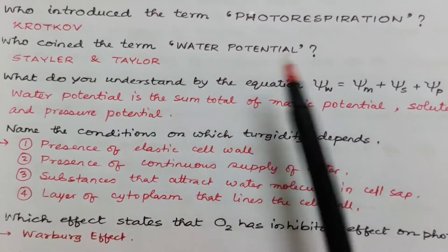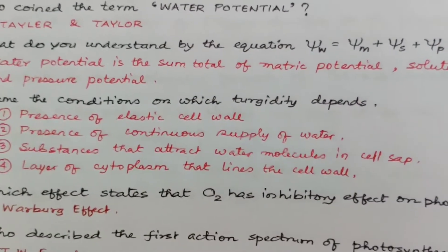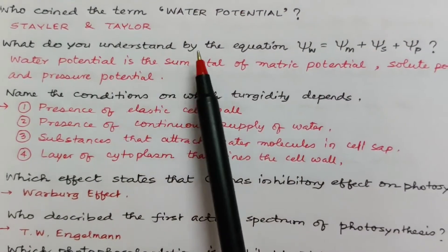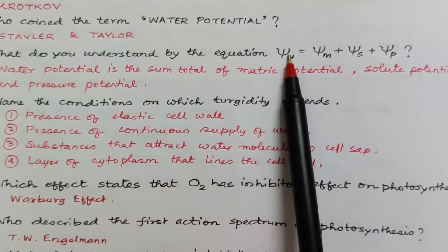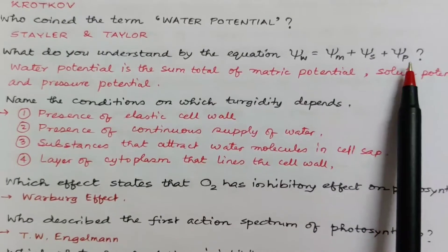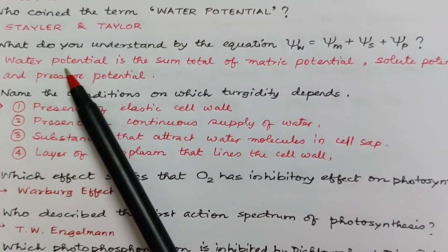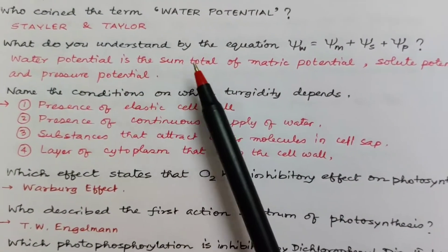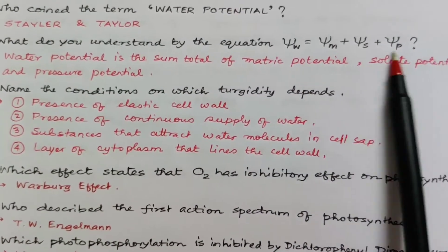Who coined the term water potential? Staler and Taylor. Now what do you understand by the equation? Water potential is equal to metric potential plus solute potential plus pressure potential. That means water potential is the sum total of all of them.